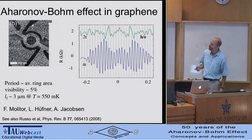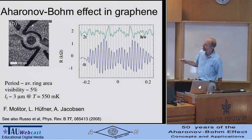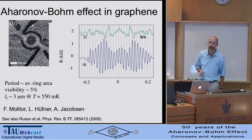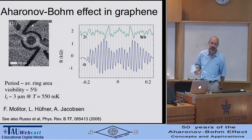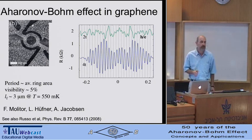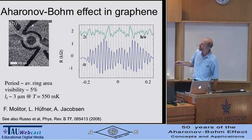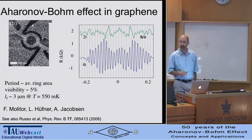Let me start with a typical sample. This is one of the newer materials—a graphene sample. This entire sample has been cut out from a layer of graphene. The dark areas are where the graphene has been removed; the gray areas are where the single layer graphene is still intact. This is a four-terminal geometry. You can pass current in one direction, measure the resistance, and observe very nice Aharonov-Bohm oscillations as a function of magnetic field.